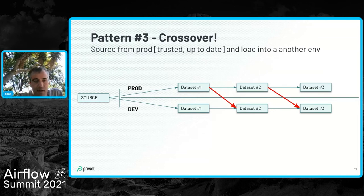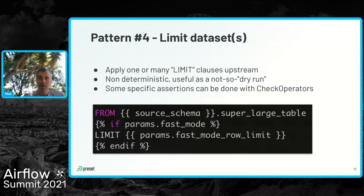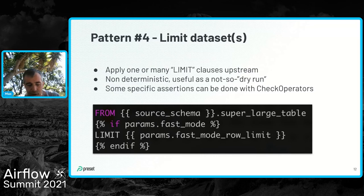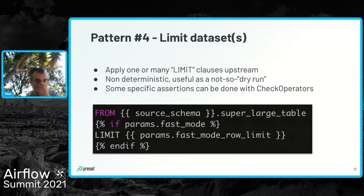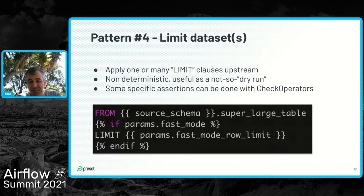Another pattern is limiting the dataset — the idea of a dry run or lean mode when you don't want the pipeline to run for a long time or cost a lot. You might be running a big job that takes 10 minutes or costs significant money, and you want a lean mode. Here it's easy to say — if we're in fast mode, we apply some LIMIT statements to our SQL. Similarly for a Spark pipeline you could squeeze in a limit on record count.